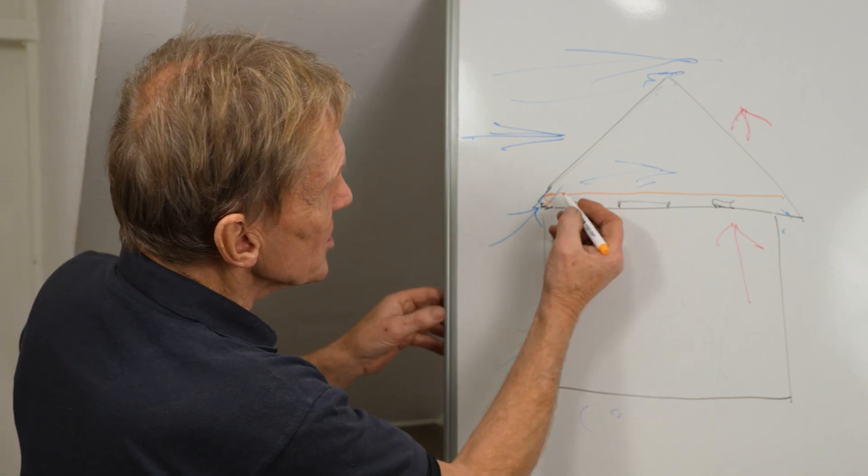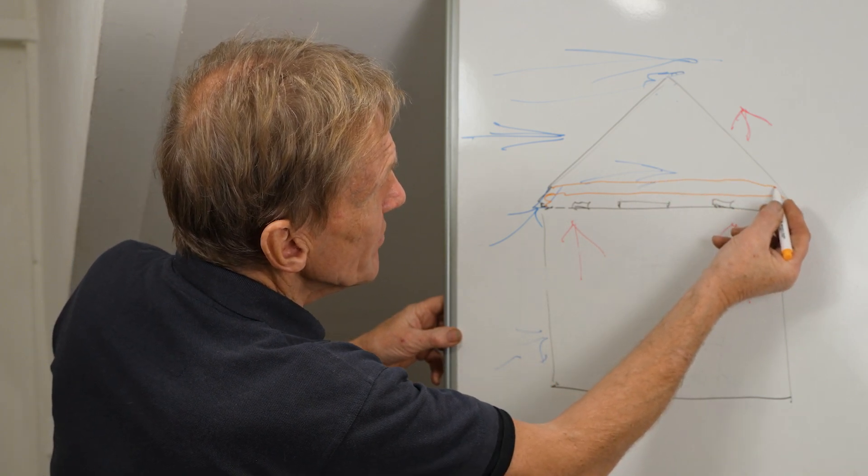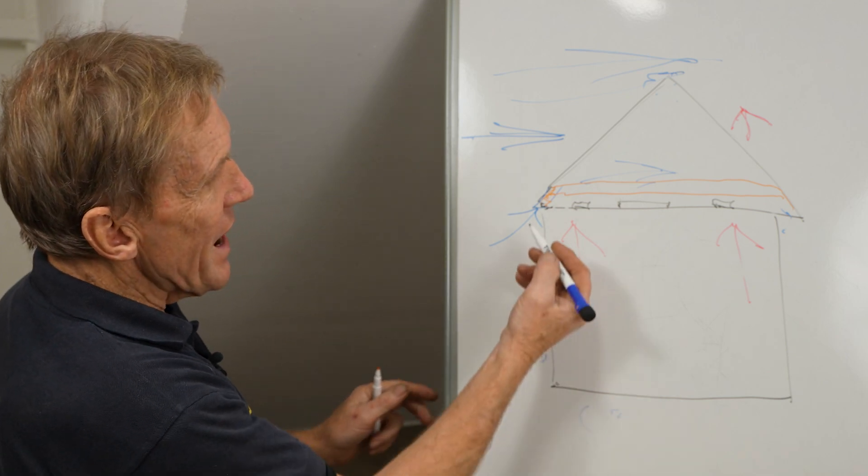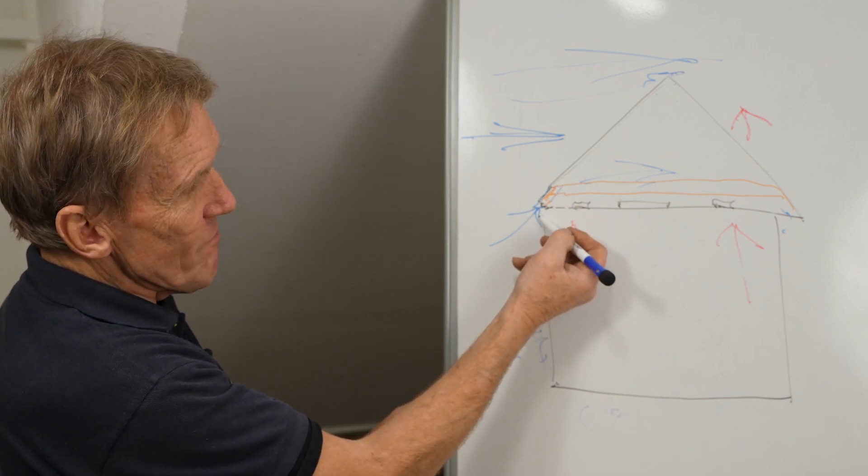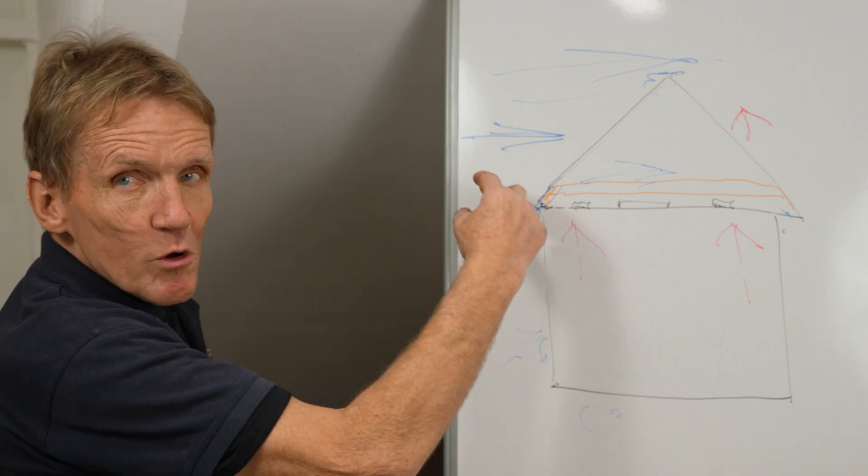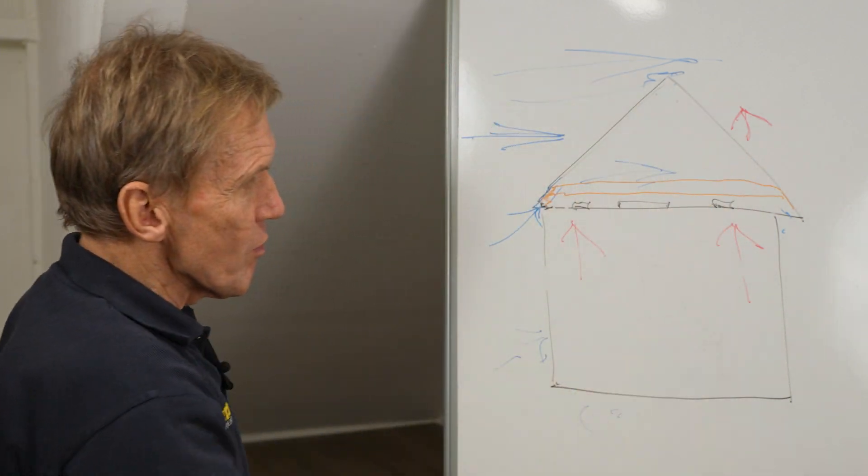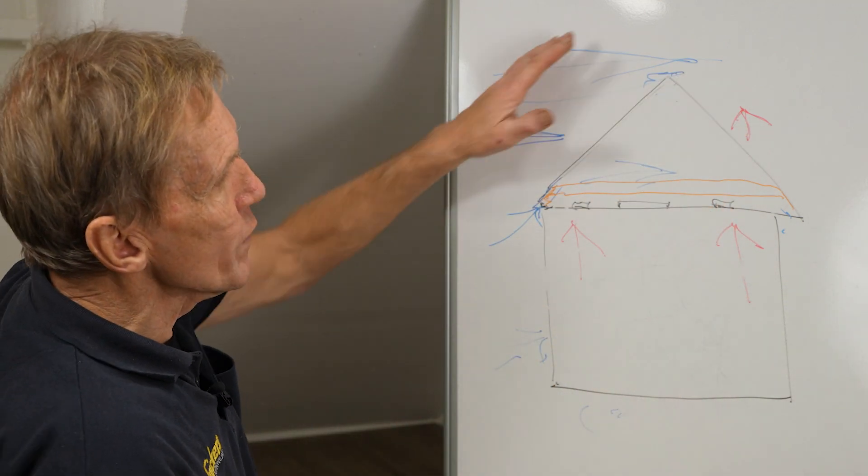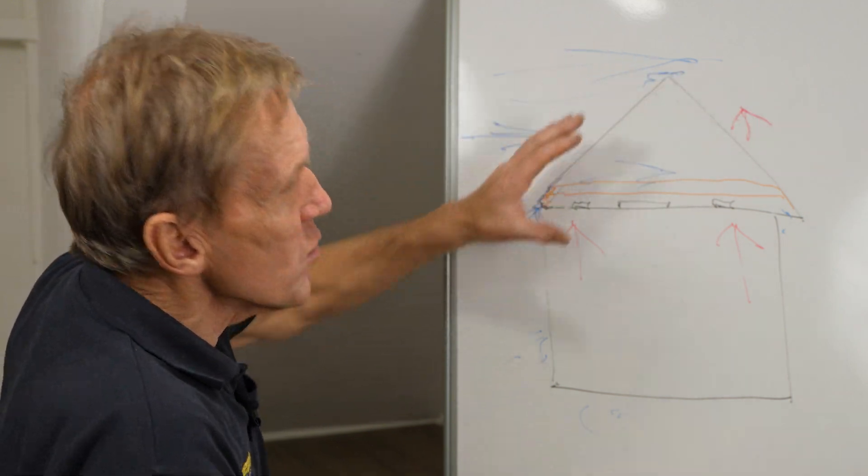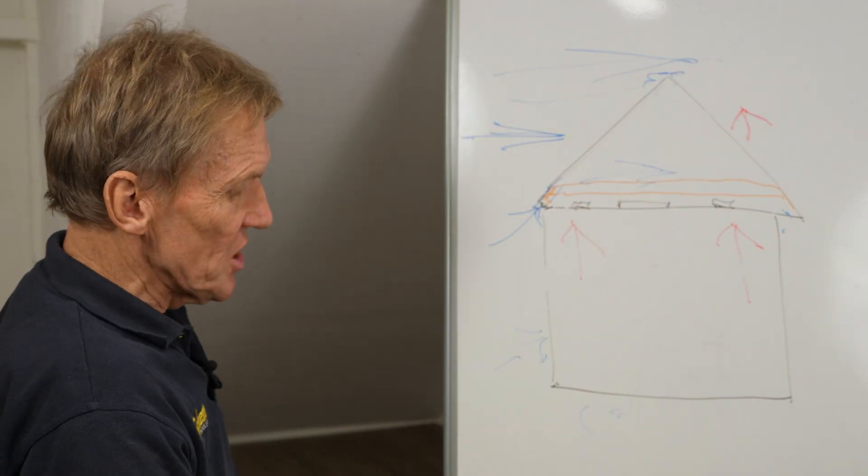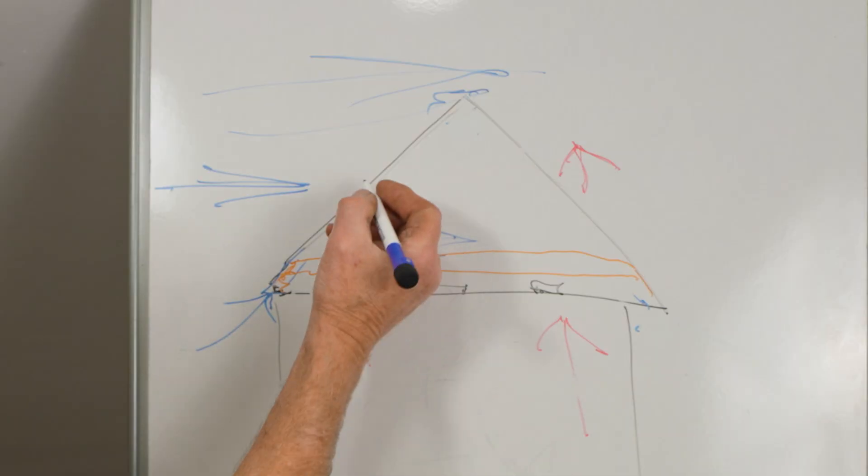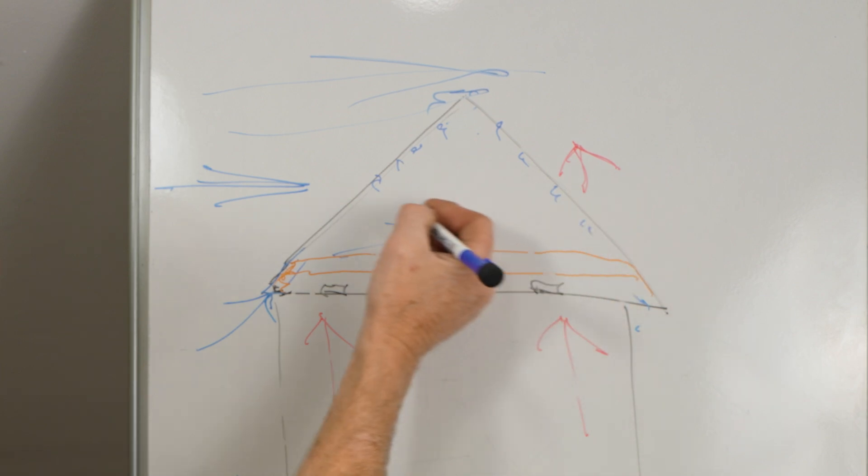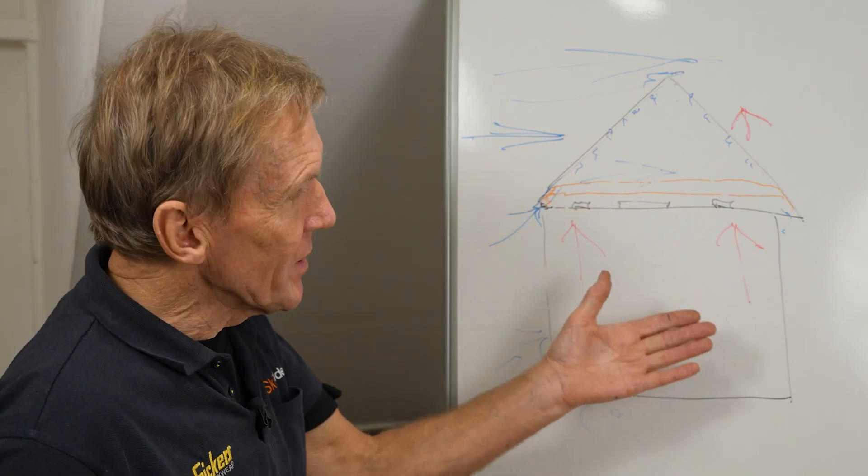When we increase our insulation, going for the modern standard, say 200 millimeters up there, what very often happened is that people blocked up these air inlets. That meant the roof space was no longer ventilated properly. But of course we still had all this moisture escaping from the house into that cold roof space, and because that cold roof space is now colder because we've put more insulation in there, very soon we were getting moisture droplets forming on the underside of the roofing felt.